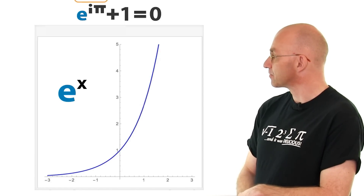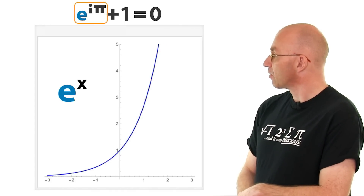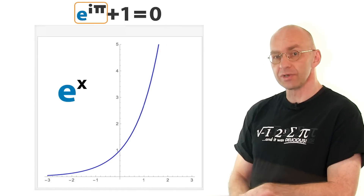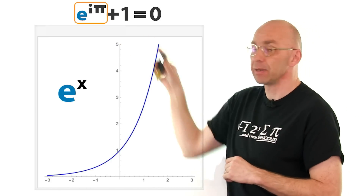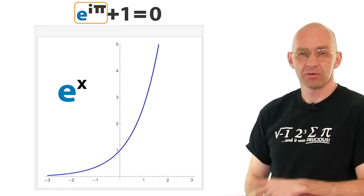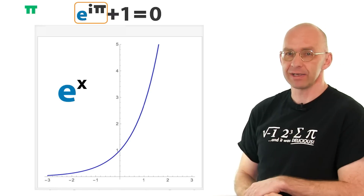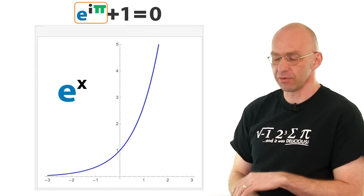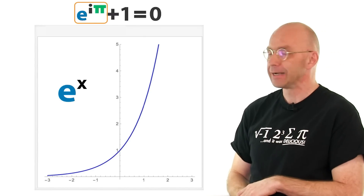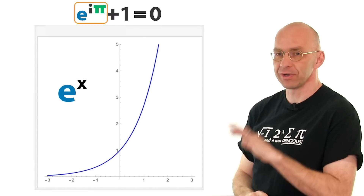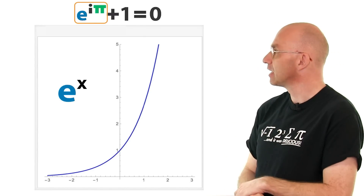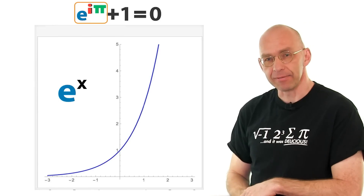Now what we're supposed to do is evaluate the exponential function at i pi. We all know what pi is — the Simpsons also know what pi is, but that's another video. The question is: what's i?